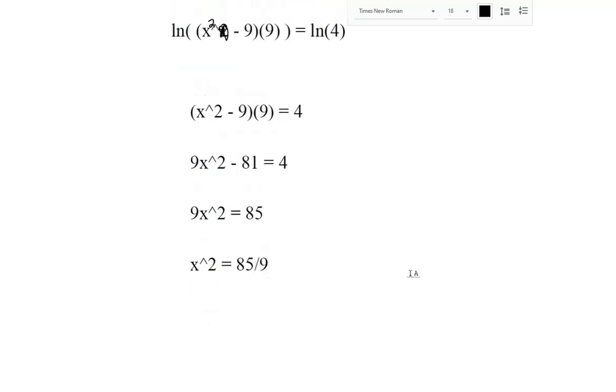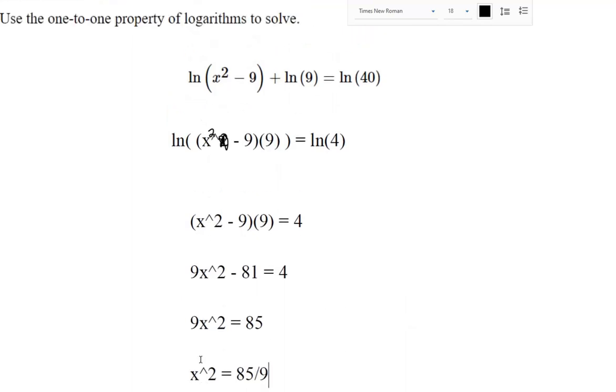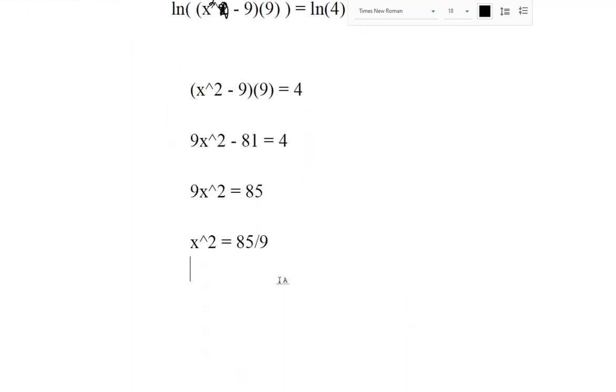Then use a square root to cancel out the square. A square root means we need to consider both positive and negative solutions, so x is positive or negative square root of 85 over 9.